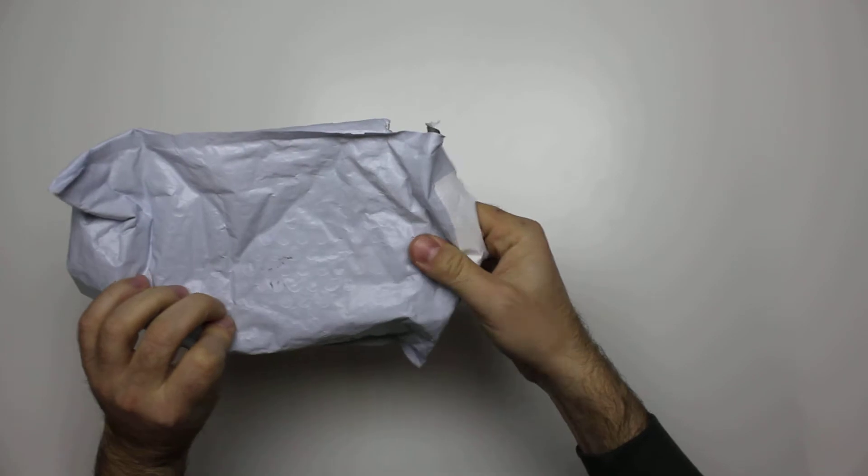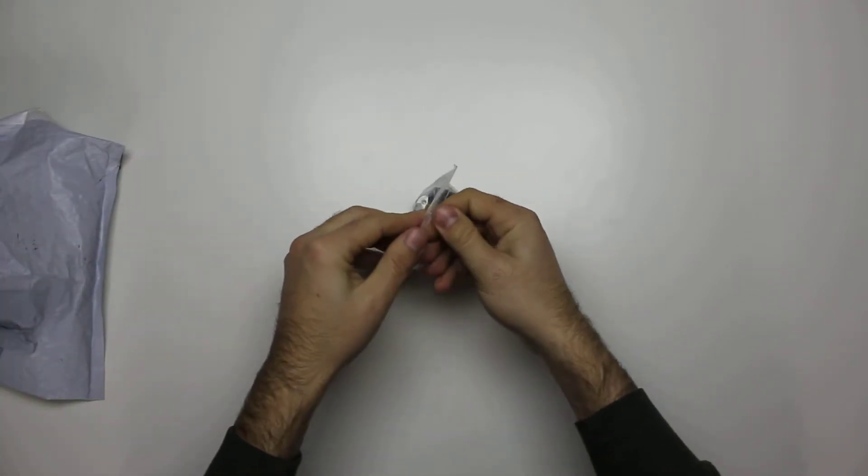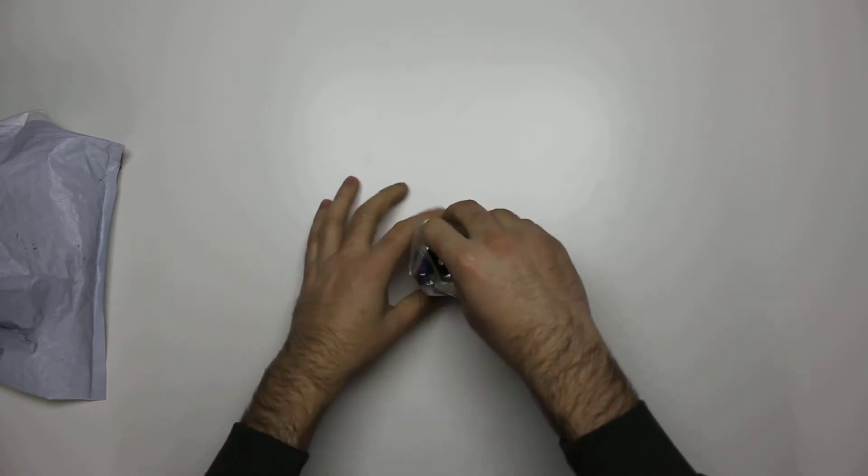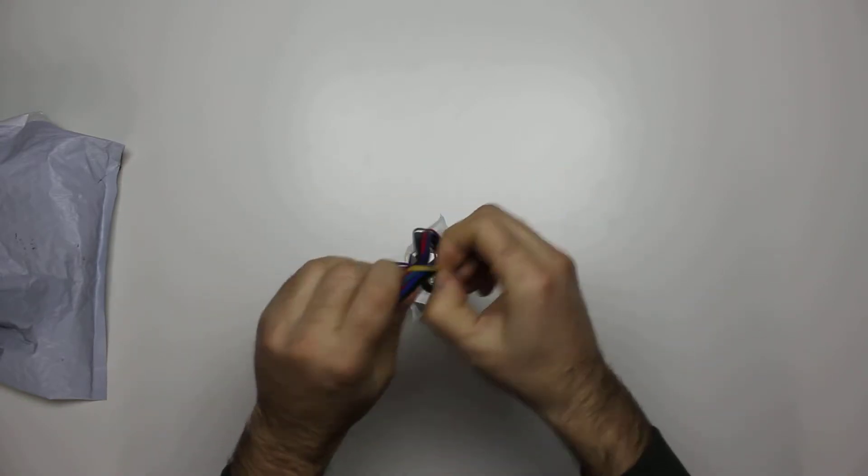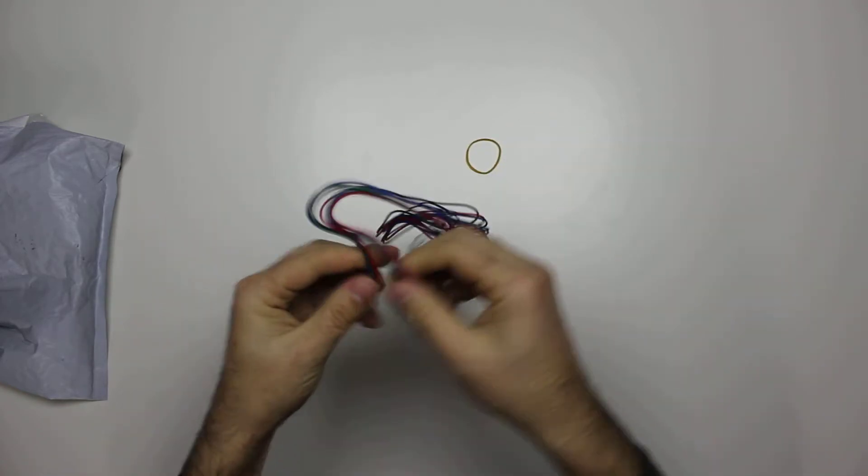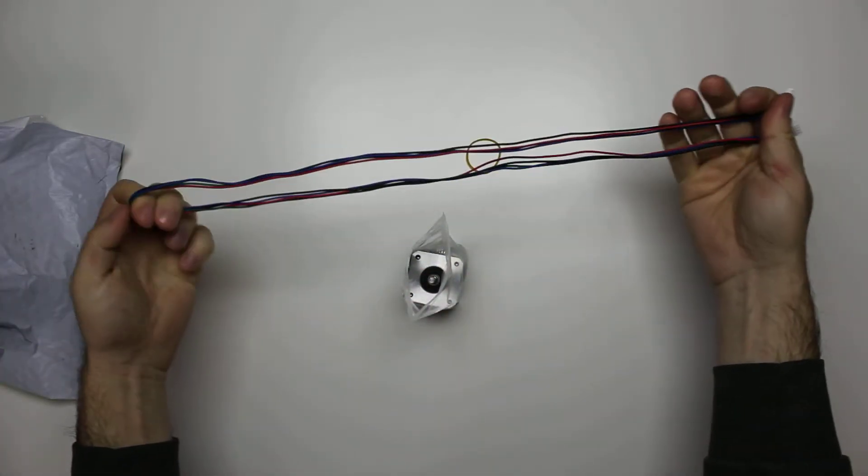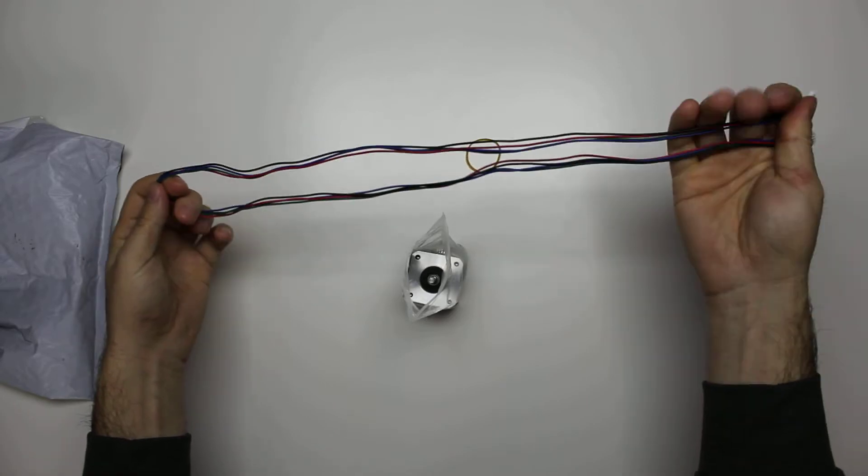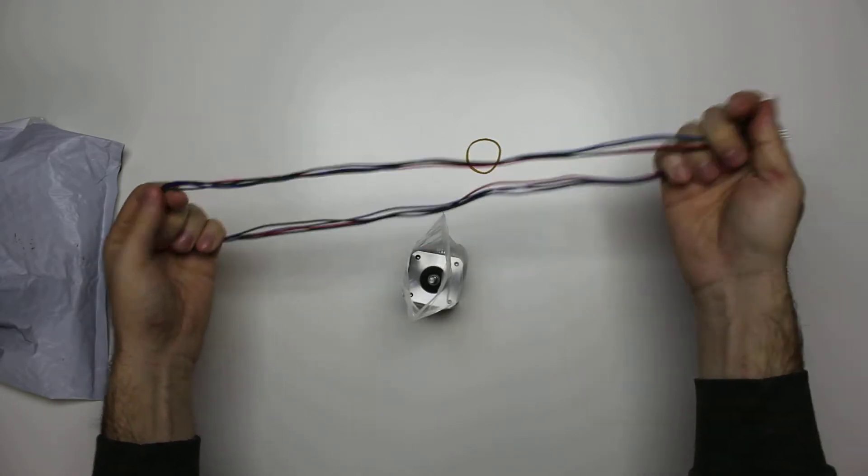It comes in a bubble bag, and the cable is quite long, so it should be enough to position the motor in any place in the printer.